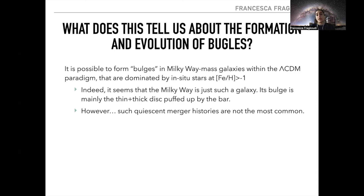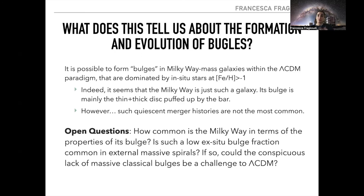However, such quiescent merger histories are not the most common in lambda-CDM, which leaves open questions: how common is the Milky Way in terms of the properties of its bulge? Are there other galaxies with such low ex-situ fractions? Is this common in external massive spirals? And if so, does this conspicuous lack of massive classical bulges present a challenge for lambda-CDM? I'm really looking forward to discussing more with you all on Slack and in the discussion sections. Thank you.